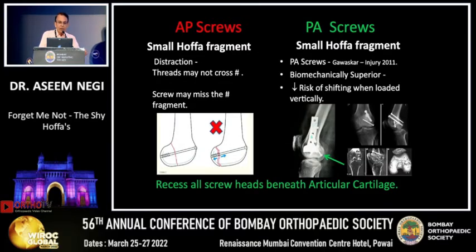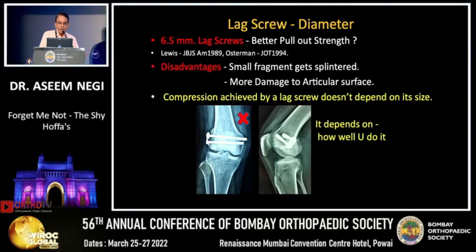However, if the fragment is small, AP screws can cause destruction at the fracture site because the threads may not cross at all, or the screws may miss the fragment entirely. In that case you have to use PA screws, which are biomechanically superior.